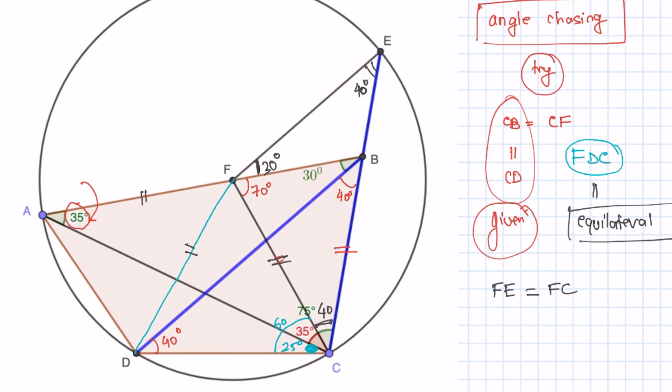So by SAS congruency, the triangles are congruent meaning that BD and FE are equal. Can you tell me which two segments are also parallel in this picture? Think about it. Put a comment in the description.